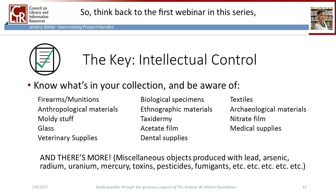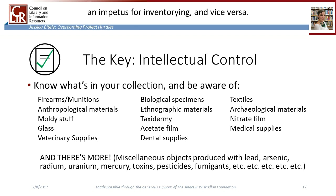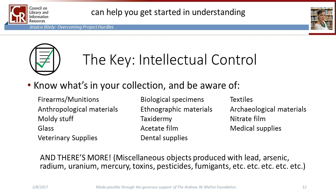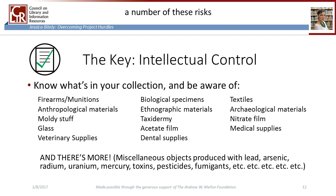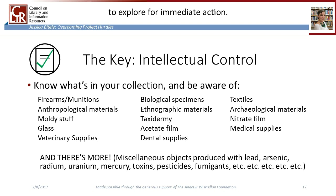Think back to the first webinar in this series — really, all of your project planning relies on knowing what's going on in your collections. Likewise, thinking about the collection access session, cataloging can provide an impetus for inventorying and vice versa. The list of hazards can help you get started in understanding where risks might lie. Many of you already came up with a number of these risks as we were going through the scenario. Developing an awareness of your collections and potential risks to and from them can point you towards the most fruitful areas to explore for immediate action.